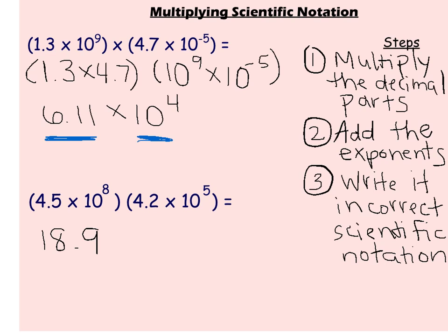Then I'm going to add the exponents. So I look at 10 to the 8th power and 10 to the 5th power — it's going to be times 10, and I add 8 plus 5, and I get 10 to the 13th.